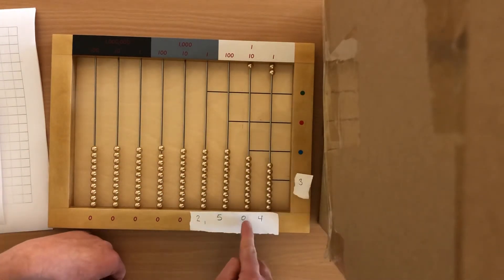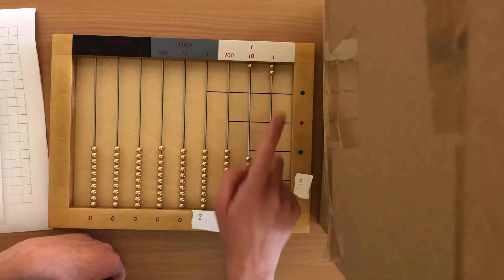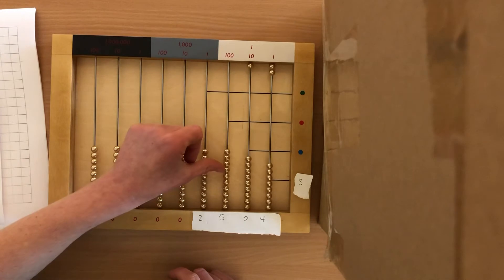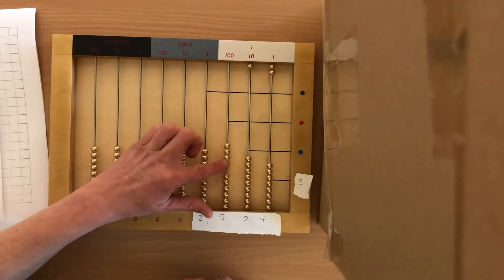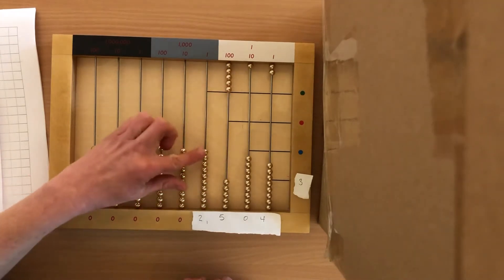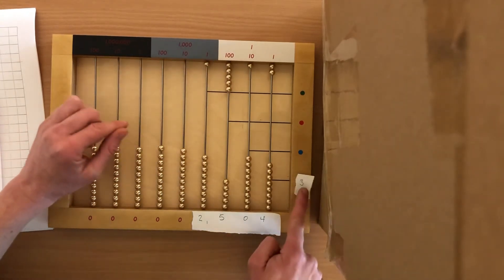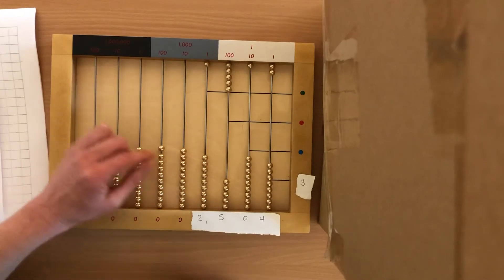We're doing 3 times 0, nothing. 3 times 5 is 15. So how would I show 15? I would put 5, 1 for 15. 1 and 5. 3 times 2, 6.